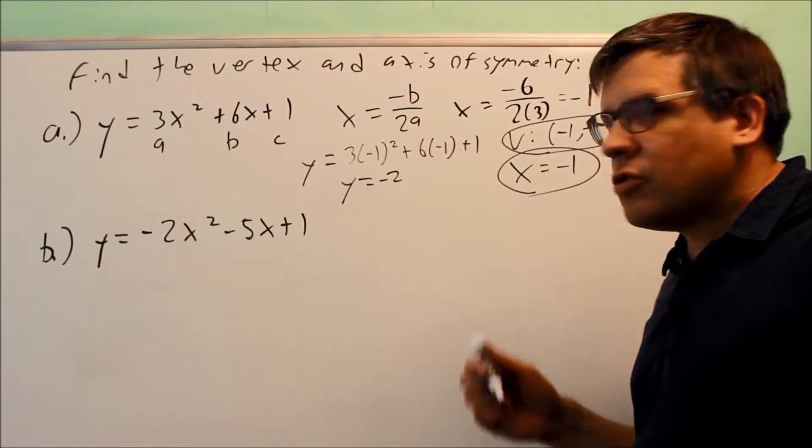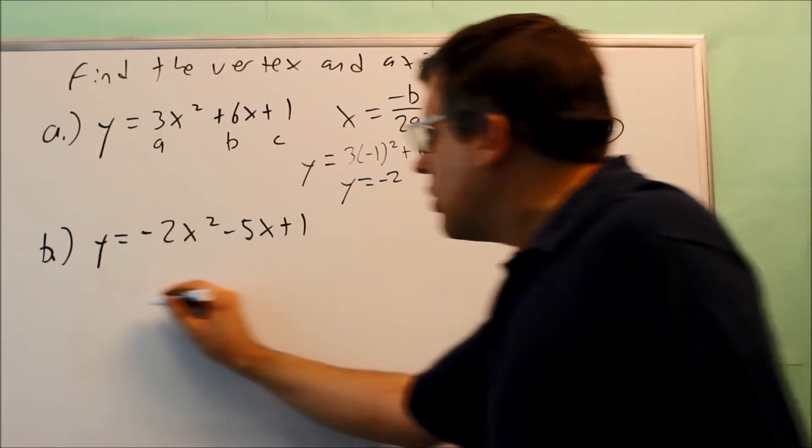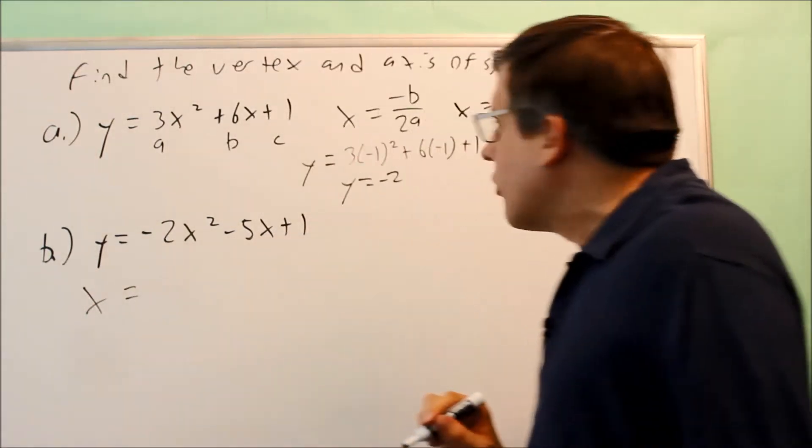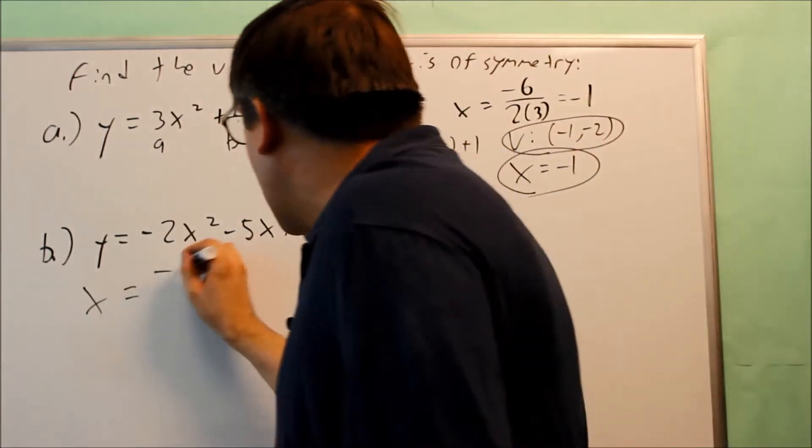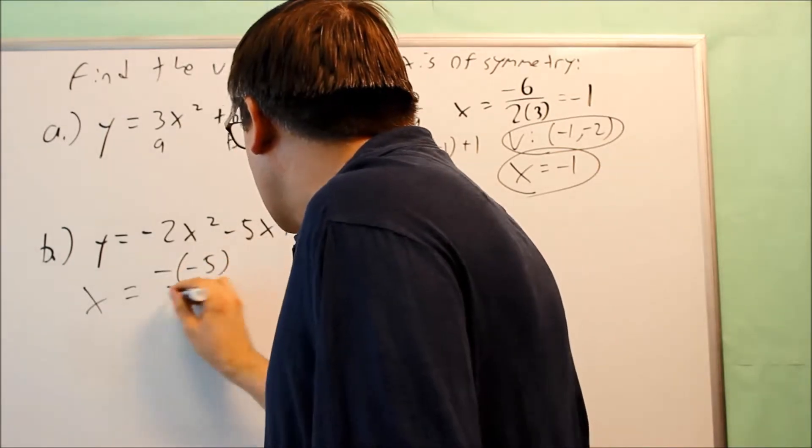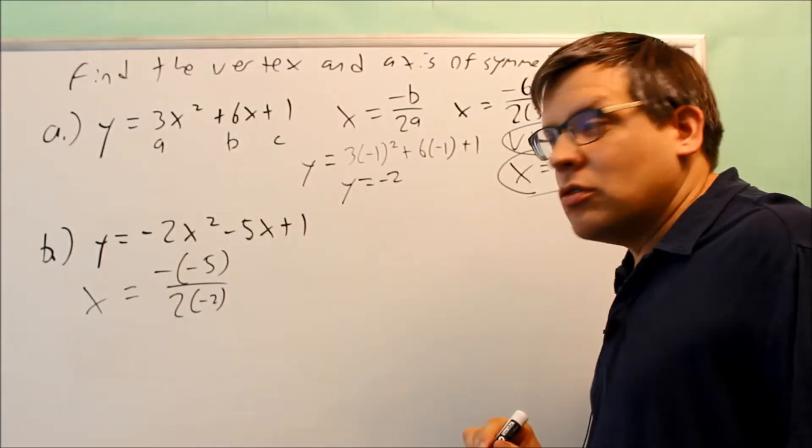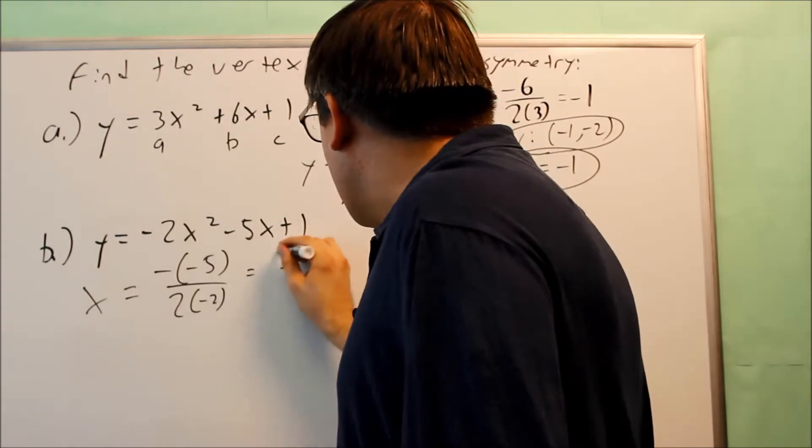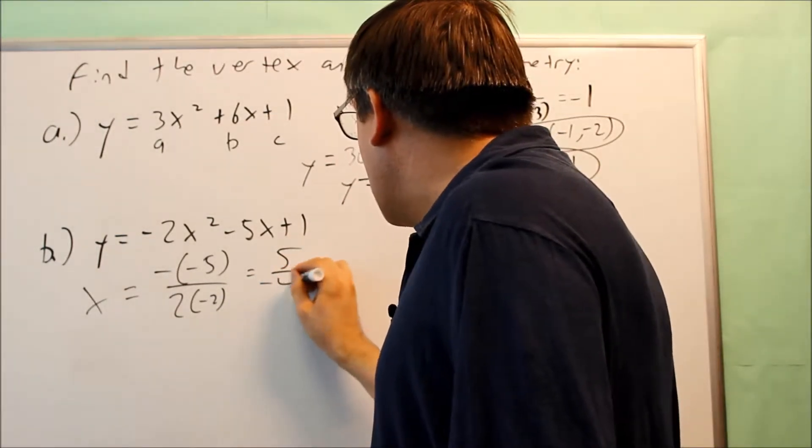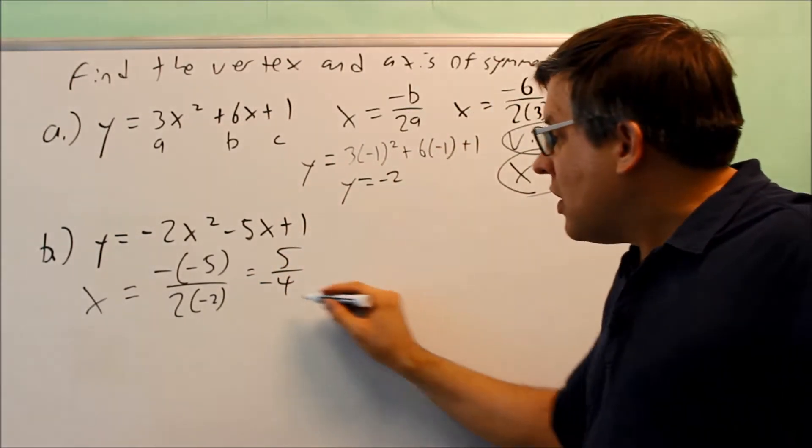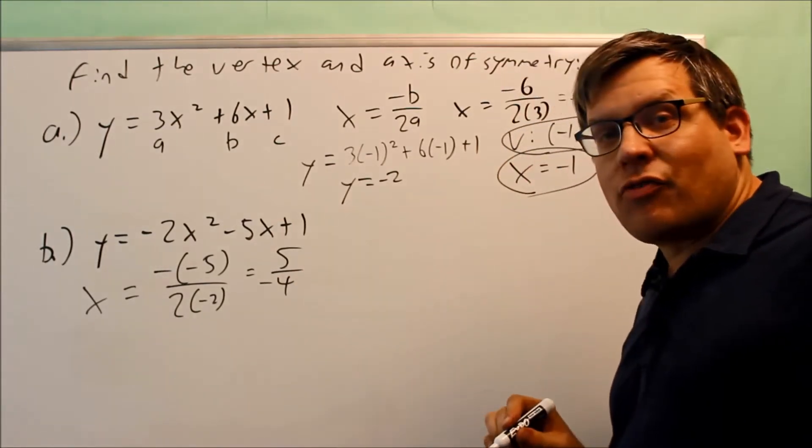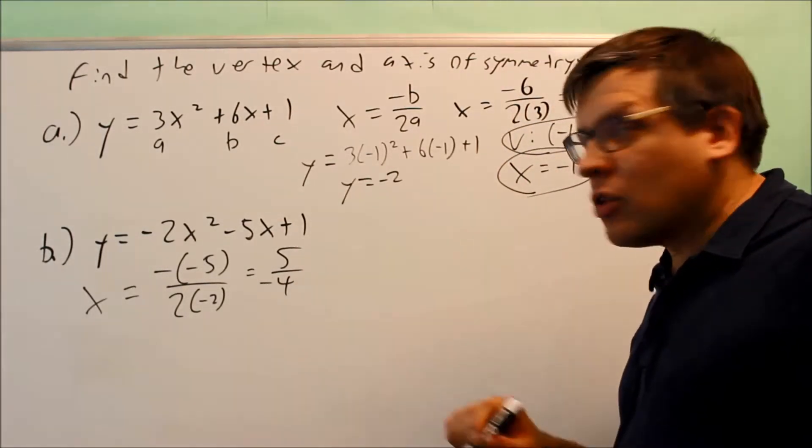Now next, this one down below, we're going to do exactly the same thing. We want to do x equals negative b over 2a, so we're going to do negative times negative 5 all over 2 times negative 2. Now if you simplify that, you get positive 5 on top, and you get negative 4 on the bottom, which means that your x-coordinate is going to be negative 5 fourths.